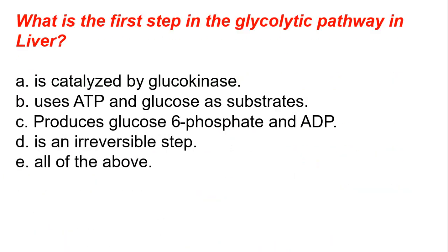What is the first step in the glycolytic pathway in the liver? A, it is catalyzed by glucokinase. B, it uses ATP and glucose as substrates. C, it produces glucose-6-phosphate and ADP. D, it is an irreversible positive reaction. E, all of the above. The answer is all of the above.